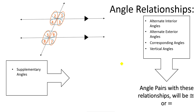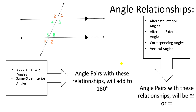The last angle relationship I am going to go over today is same side interior angles. Same side interior angles are angles that are on the same side of the transversal and inside the parallel lines. There are only 2 pairs: 3 and 6, and 4 and 5. Supplementary angles and same side interior angles both add to 180 degrees. Same side interior angles add to 180 degrees when you have parallel lines; supplementary angles always add to 180 degrees.